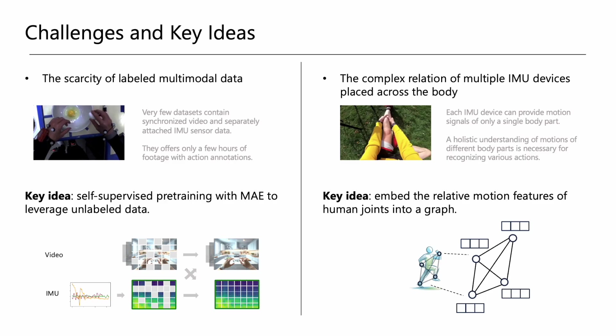To address this data limitation, we propose a novel approach using a self-supervised pre-training method based on masked auto-encoders. This method allows us to leverage unlabeled data by learning the correlation between video and IMU signals in an unsupervised fashion.